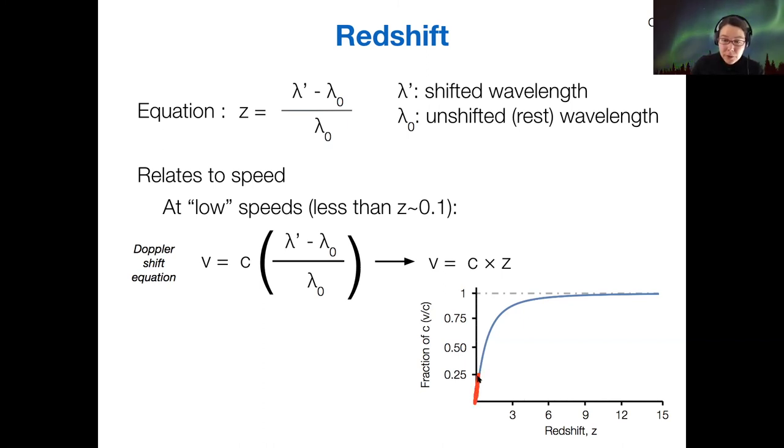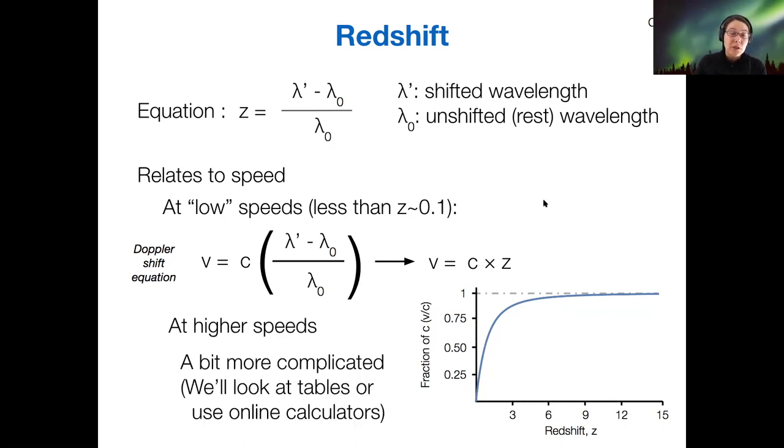This relation between the velocity and the redshift, it becomes less and less linear and it looks more like a curve and then it eventually saturates at one, right? So this area when the redshift is less than 0.1, there this equation applies, but above we have to have a different equation that takes into account the effects of relativity. So I'm not going to get into it, but actually your book does talk about it. So we can use tables or online calculators to calculate the speeds of objects with larger redshifts than 0.1.